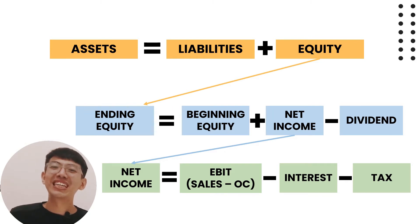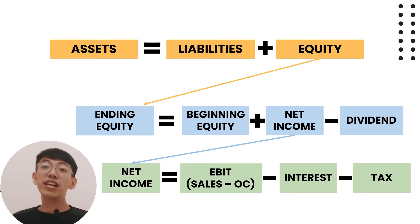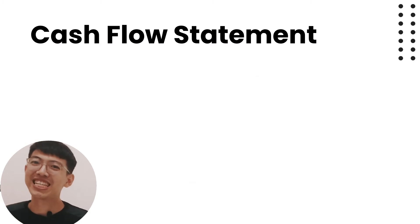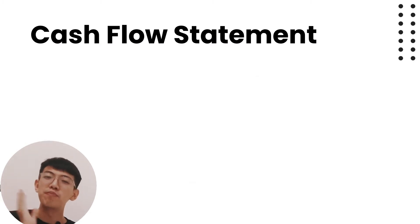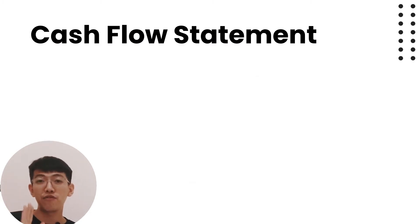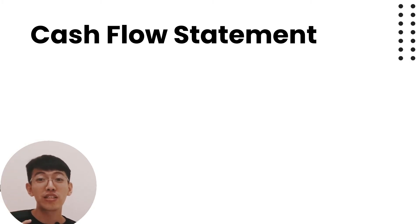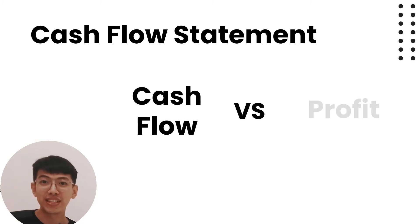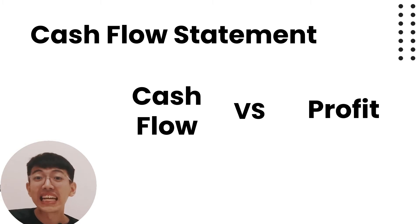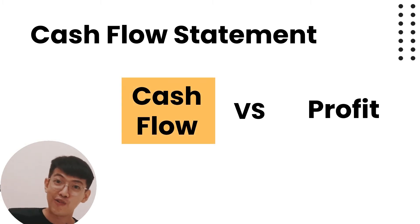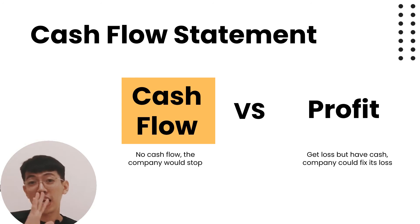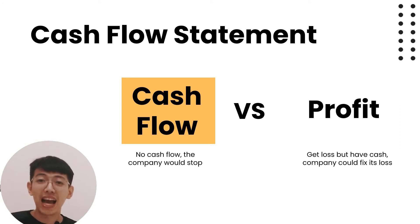The financial statements are all related to each other. Now let's go to the last financial statement: the cash flow statement. Cash flow is the most important variable in finance. If I ask you which one should the investor be most concerned with — cash flow or profit — the answer is cash flow. Why? If there is no cash flow, the company will stop and profit will definitely go down.